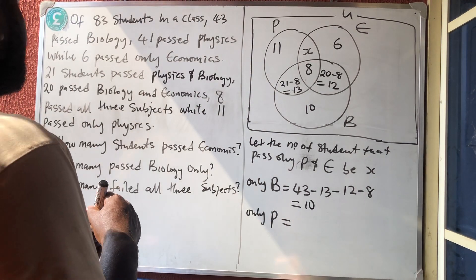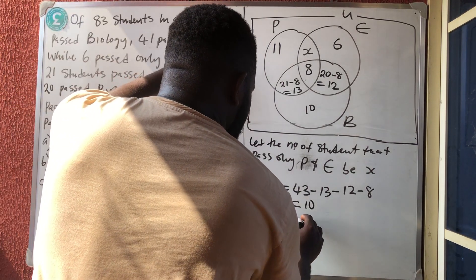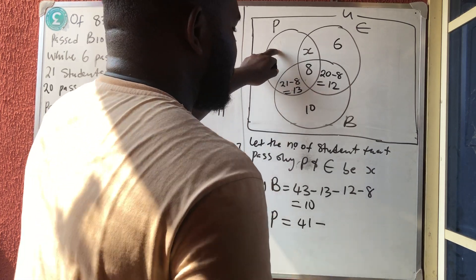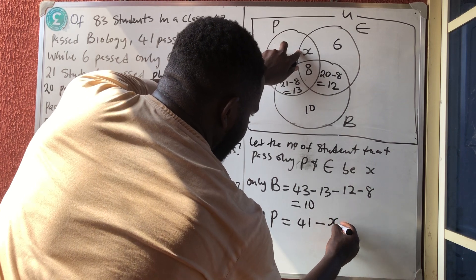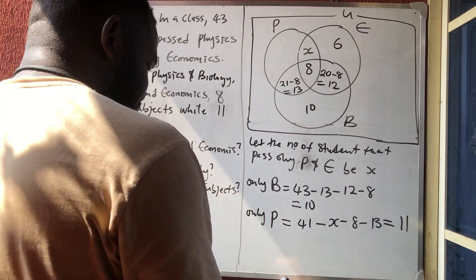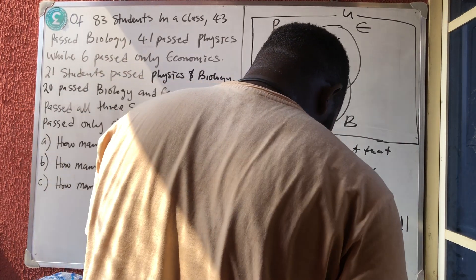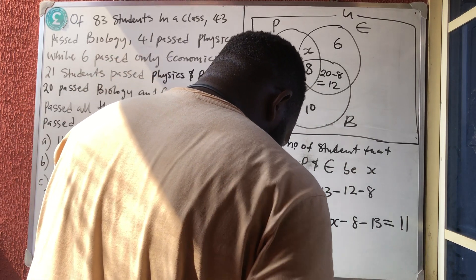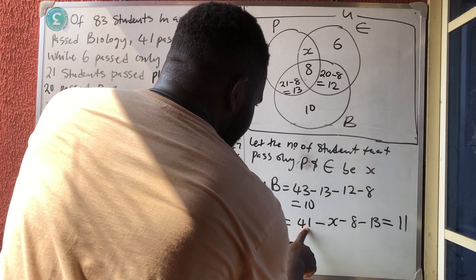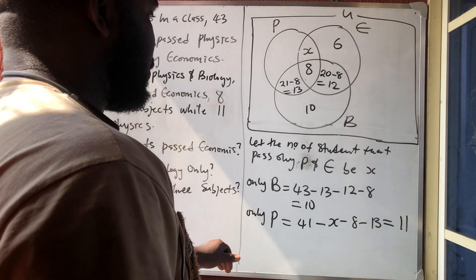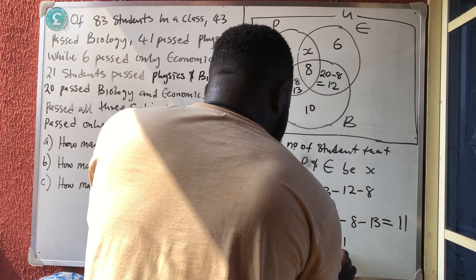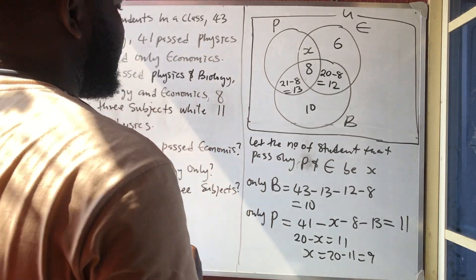For only Physics: 41 passed Physics total. Subtracting what entered inside the Physics circle — 13 from Physics and Biology, 8 from all three, and x from Physics and Economics — we get 41 minus 13 minus 8 minus x equals 11. That simplifies to 20 minus x equals 11, so x equals 9. Therefore 9 students passed both Physics and Economics.